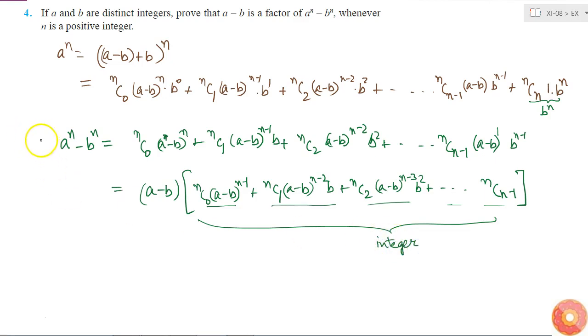So what I can tell: a^n - b^n is (a-b) multiplied with an integer. That means that (a-b) is a factor of a^n - b^n, right?